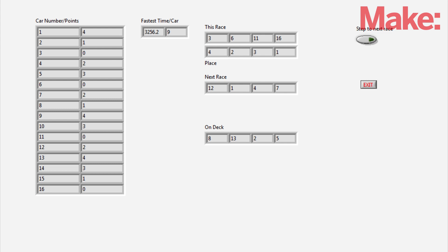Here on the left, you see the cars that have raced or the car list - 1 through 16 in this case - and the points they get. For first place, it's 4; second place, 3; etc. If they have a zero listed here, it means they haven't raced yet.